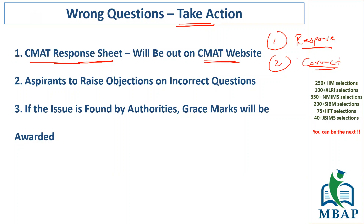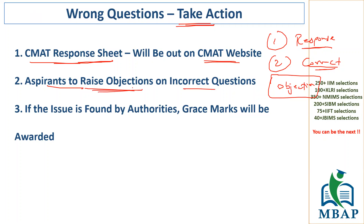Now, if the questions were wrong or if the options were wrong, the CMAT website is also going to give you the option to raise an objection. You need to click on 'Raise Objection' for the incorrect questions. The more people raise the concern, the more it is going to be highlighted for the CMAT authorities.